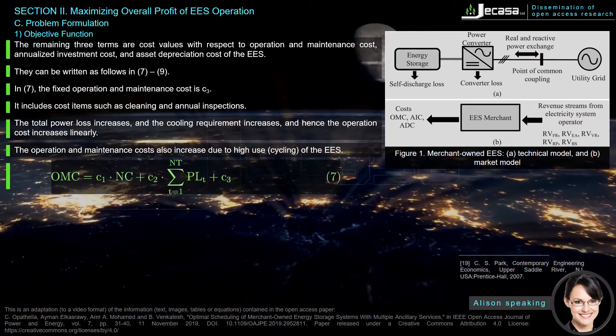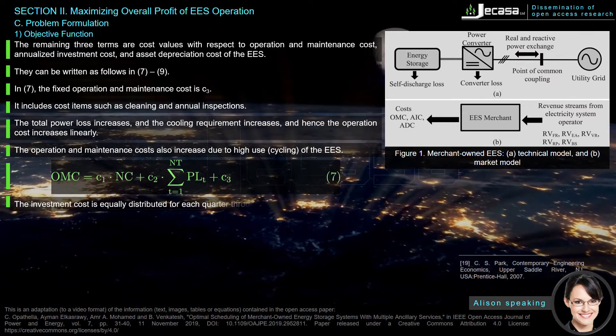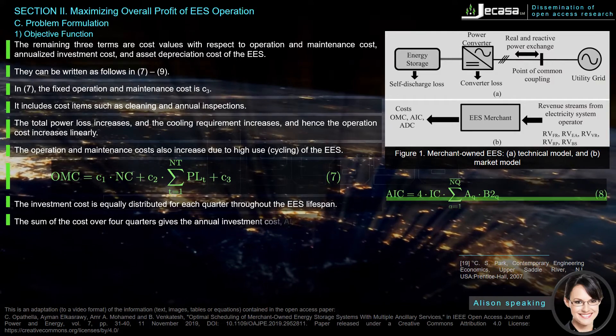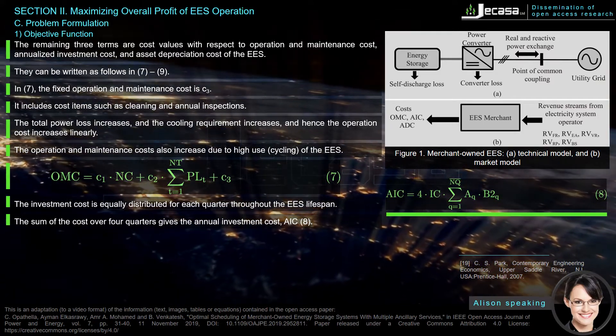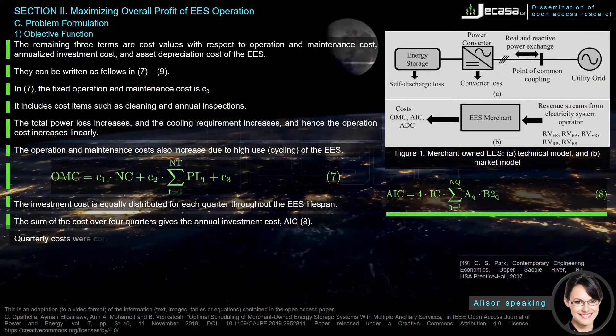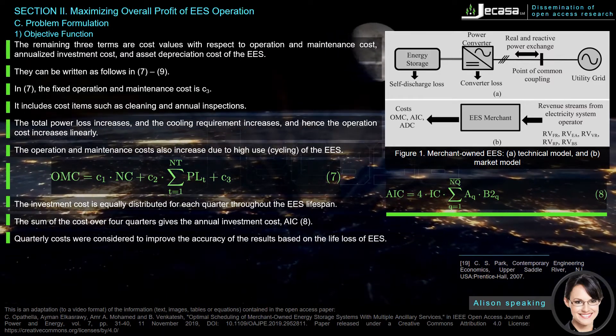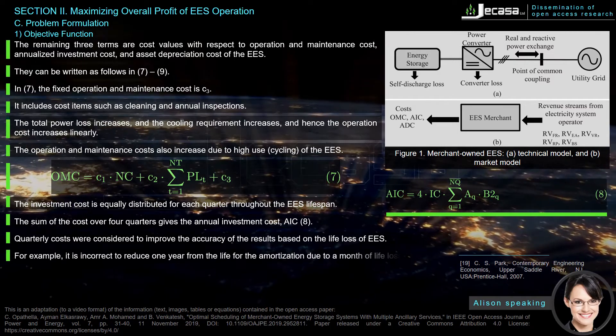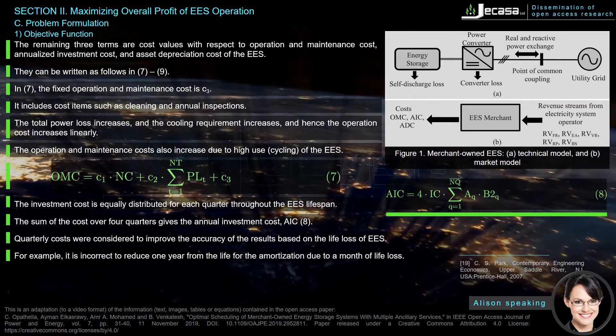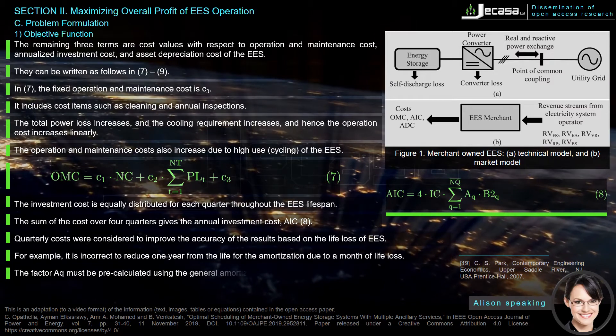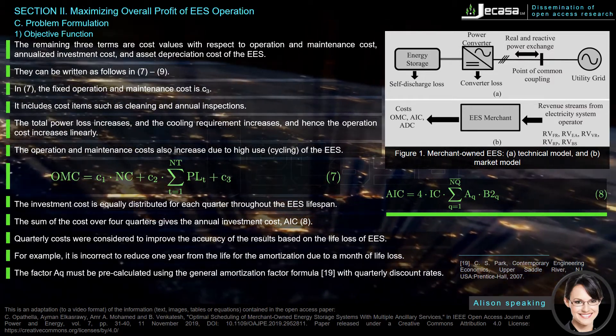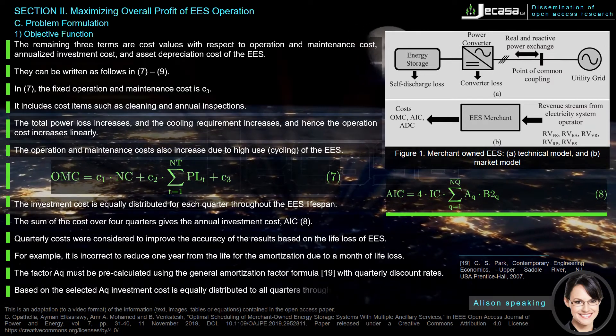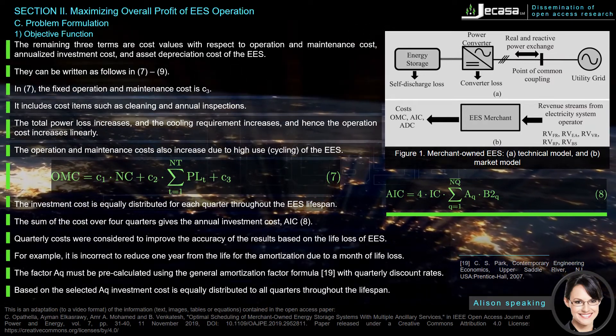The investment cost is equally distributed for each quarter throughout the EES lifespan. The sum of the cost over four quarters gives the annual investment cost AIC in equation (8). Quarterly costs were considered to improve the accuracy of the results based on the life loss of EES. For example, it is incorrect to reduce one year from the life for the amortization due to a month of life loss. The factor AQ must be pre-calculated using the general amortization factor formula with quarterly discount rates. Based on the selected AQ, investment cost is equally distributed to all quarters throughout the lifespan.